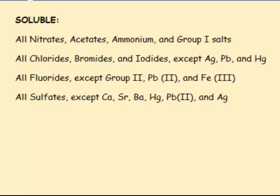Looking at the soluble substances, we have all nitrates, acetates, chlorides, and bromides. You can see that they are listed by the anion, with a couple of exceptions: ammonium and group 1. Group 1 meaning anything in the first column, excluding hydrogen — so lithium, sodium, potassium, rubidium.